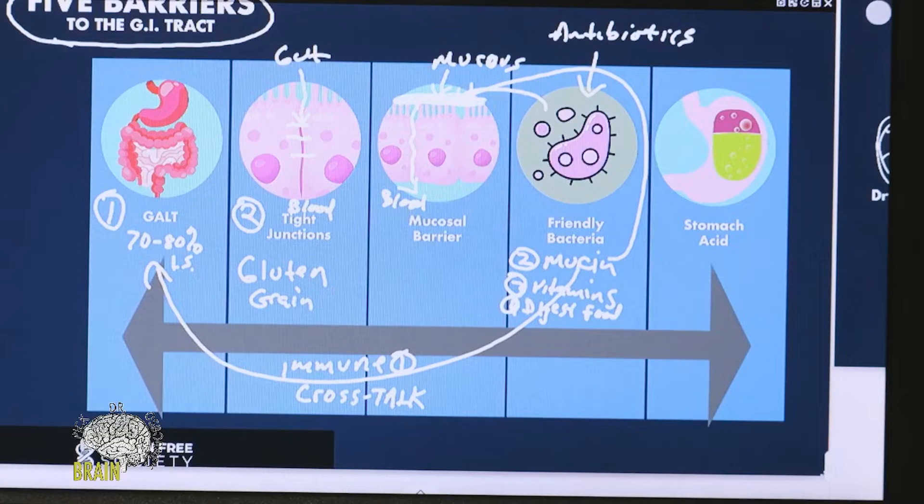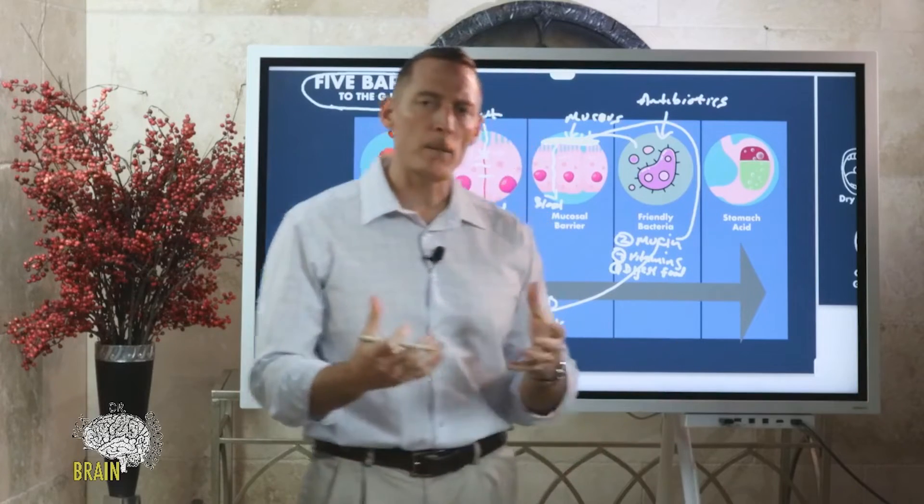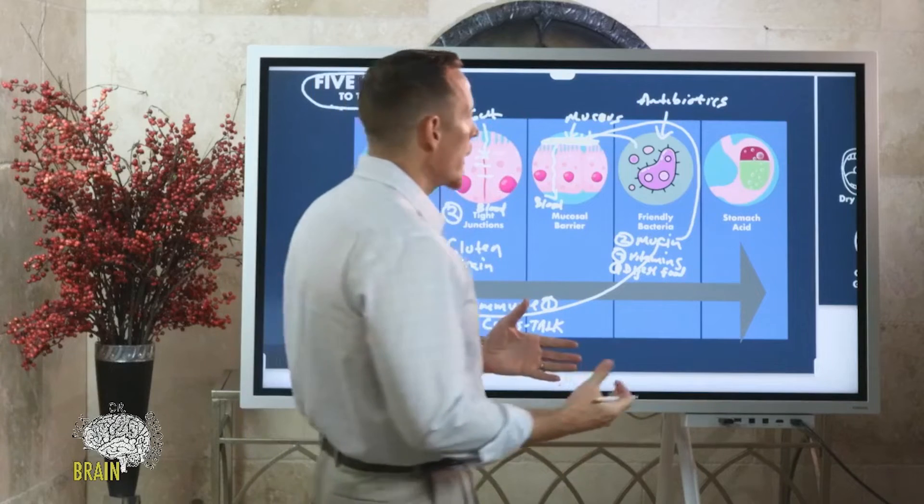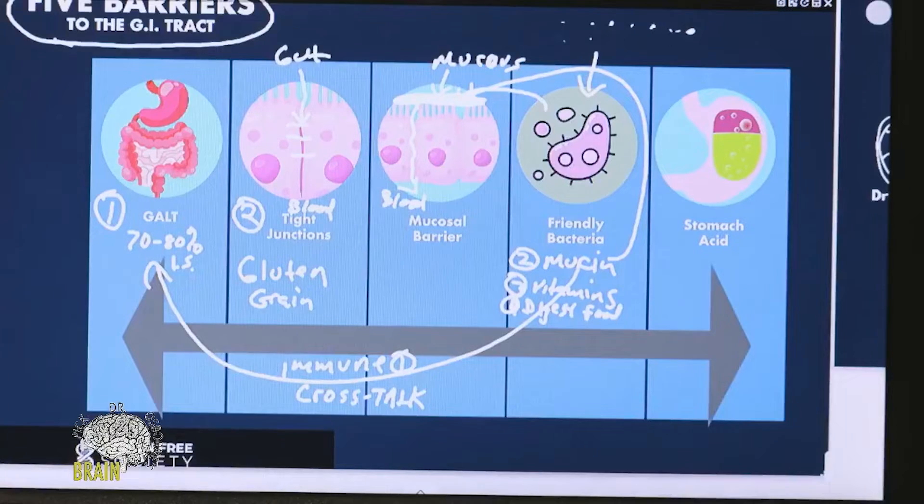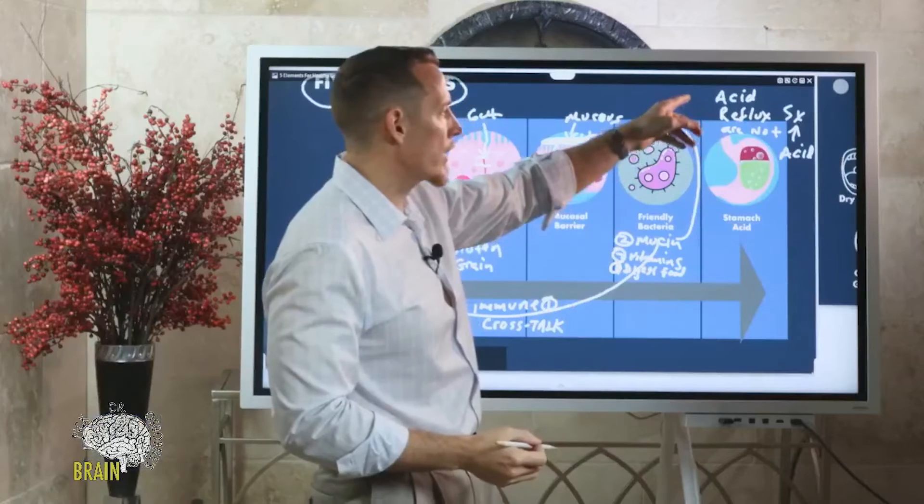This fifth barrier - your stomach acid. This is another one that people medicate into oblivion. Unfortunately, stomach acid is critical, it's important. The symptoms, a lot of times people talk about reflux, acid reflux. Most of the time acid reflux symptoms are not too much acid or increases in acid - it's actually not enough acid. A lot of people that think they have acid reflux actually have low acid production.